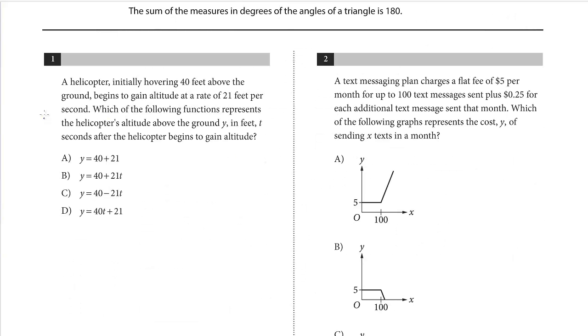All right, question 1. A helicopter initially hovering 40 feet above the ground begins to gain altitude at a rate of 21 feet per second. Which of the following functions represents the helicopter's altitude above the ground y in feet t seconds after the helicopter begins to gain altitude?